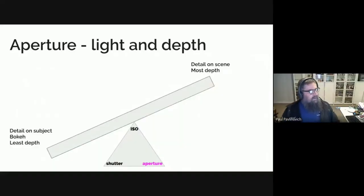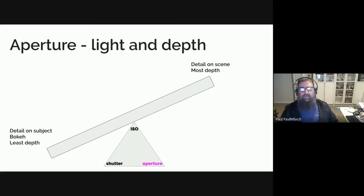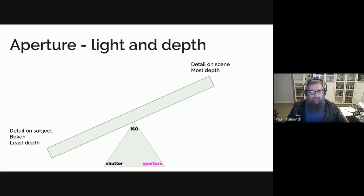Now we're going to chat about aperture for a moment, which gives you the amount of light and the depth of the image. So we're back balancing on the triangle again.